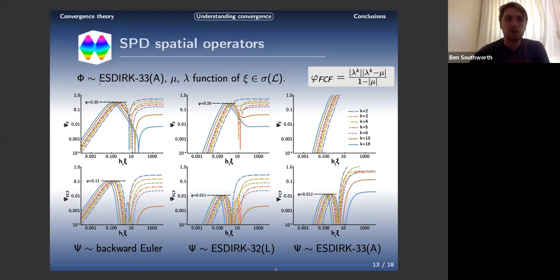Here, as an example, I use ESDIRK 33, which is a third-order, three-stage ESDIRK method that's A-stable. Z is our spatial eigenvalue, and then the eigenvalues of the coarse grid and the fine grid, mu and lambda, are functions of that. I plot the F-relaxation and FCF-relaxation convergence as a function of DT times the spatial eigenvalue for three different coarse grids. There's a few things we can note from this.